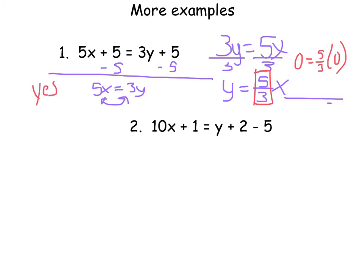The other way you could have done this is put, just go back to that putting in 0 right away. 5 times 0 plus 5 equals 3 times 0 plus 5. That 0, that 0, I'm left with 5 equals 5, which makes a true statement. So, I know that this is a proportional relationship.